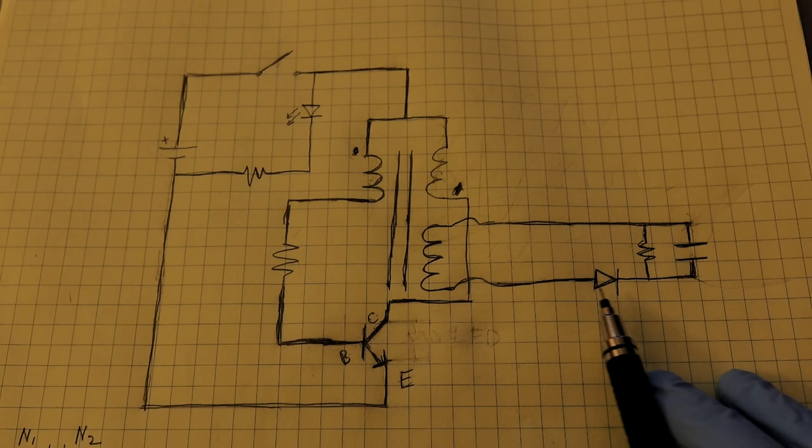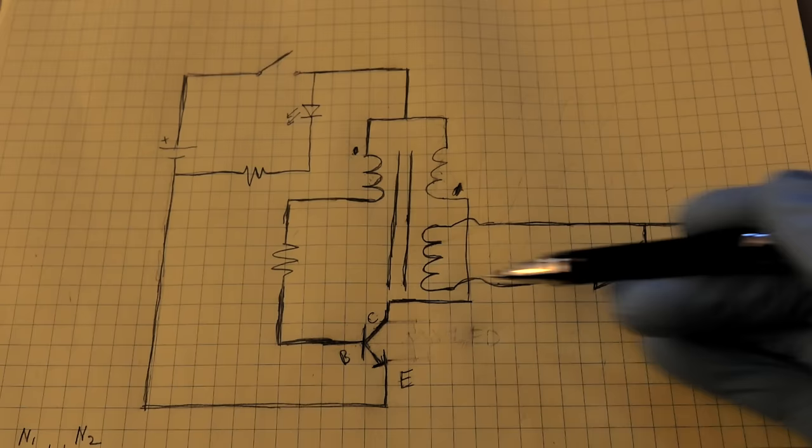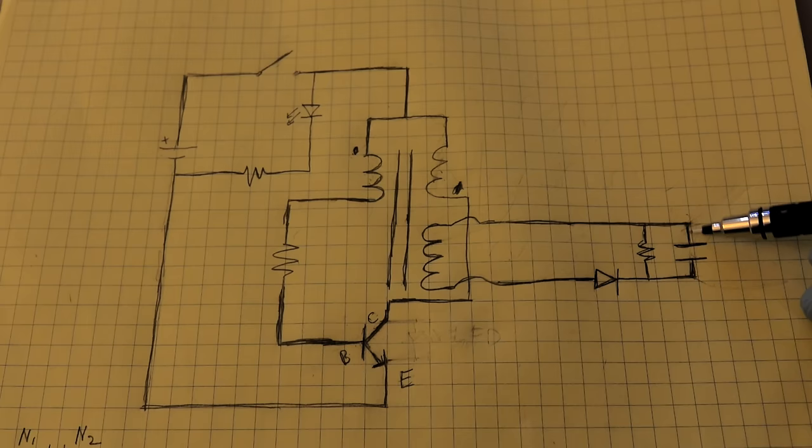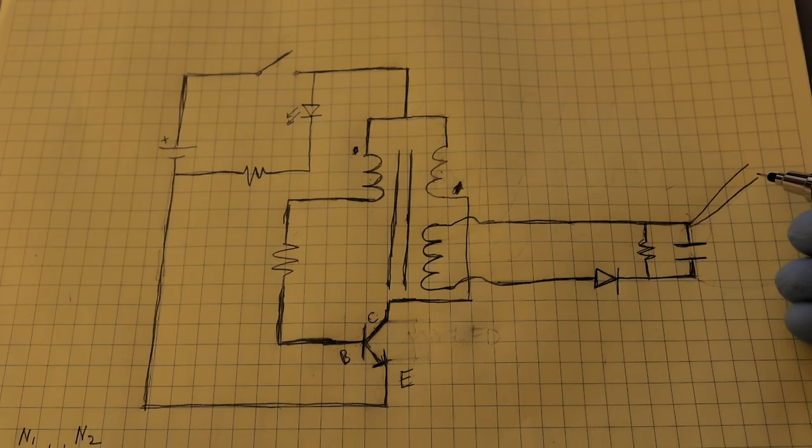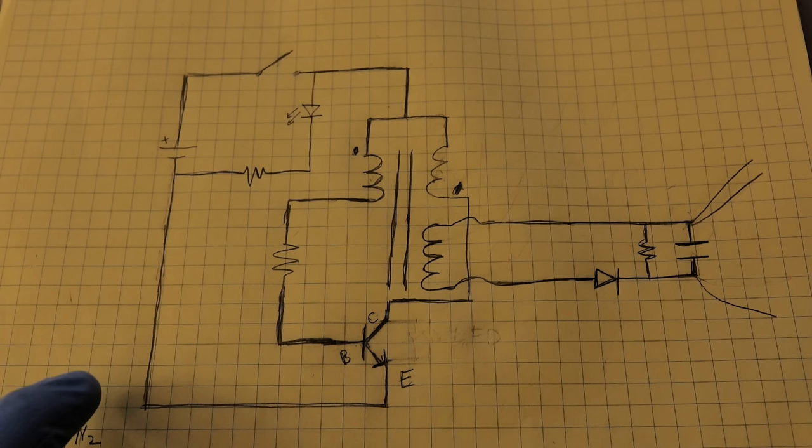Now this diode here is just acting as a rectifier. It's called a half-wave rectifier, and it's filtering out the negative humps of the alternating current. So it's only letting the positive portion come through, and as it does that, it charges up this capacitor here. And there's two wires coming from one end of the capacitor, and those are connected to the outer metal mesh of the bug zapper, and the other end of the capacitor is connected to the inner mesh.